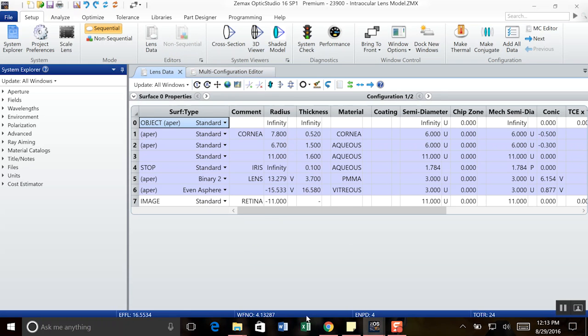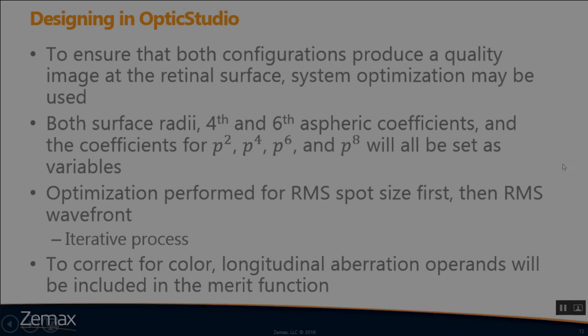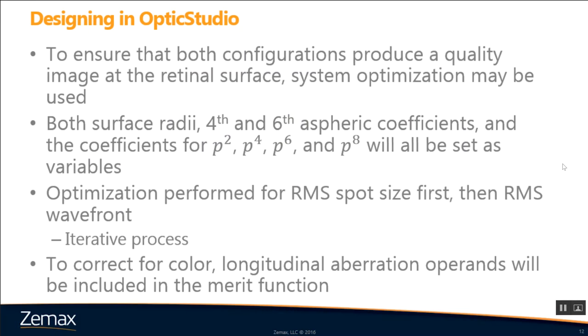So, to ensure that both configurations will be able to produce a quality image at that retinal surface, like I said before, we're going to use system optimization. Both surface radii, 4th and 6th aspheric coefficients, and the coefficients for rho squared, rho to the 4th, rho to the 6th, rho to the 8th, will all be set as variables. Optimization performed for RMS spot size will be done first, then RMS wavefront. And again, that's an iterative process that any experienced designer will know. You're going to have to kind of jump back and forth between those two. And finally, to correct for color, we'll include some longitudinal aberration operands in that merit function.